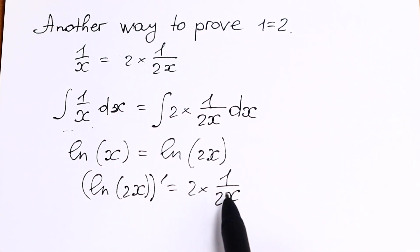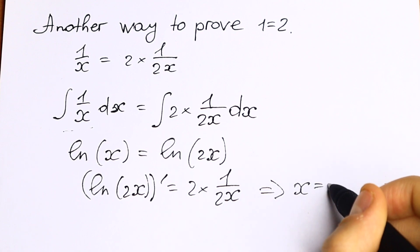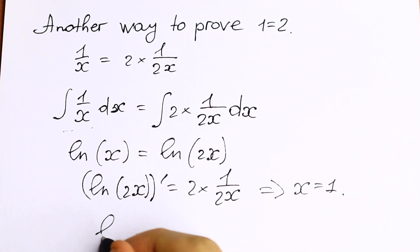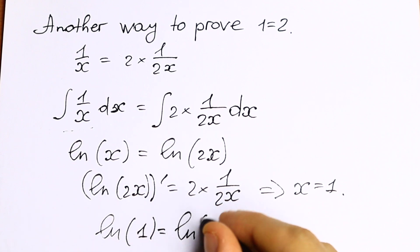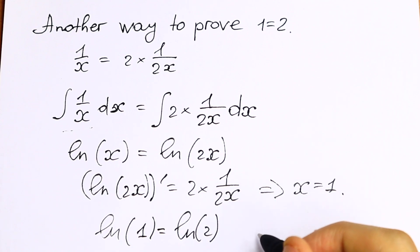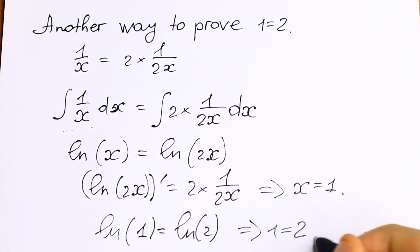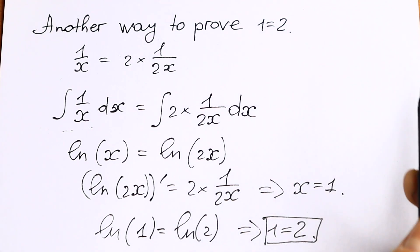Since this is true for all x not equal to 0, we can set x equal to 1. Then we end up with natural log 1 equal to natural log 2, or equivalently 1 equal to 2 — which is what we were trying to prove.